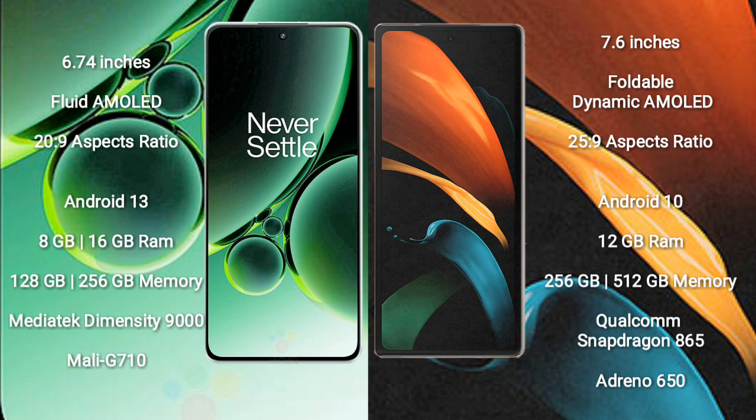OnePlus Nord 3 comes with 8GB or 16GB RAM and 128GB or 256GB internal storage, with a MediaTek Dimensity 9000 processor and Mali-G710 GPU. Samsung Galaxy Z Fold 2 comes with 12GB RAM and 256GB or 512GB internal storage, with a Qualcomm Snapdragon 865 processor and Adreno 650 GPU.